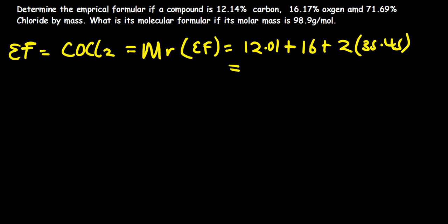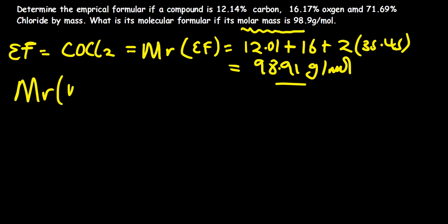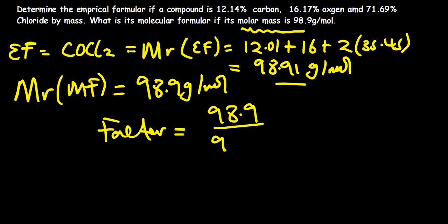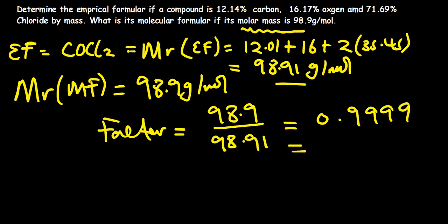What do you get as your molar mass for the empirical formula? When I add this, I'm getting 98.91 grams per mole as my empirical molar mass. The molar mass of the molecular formula is given as 98.9 grams per mole. Our factor is found by dividing the molecular formula mass by the empirical formula mass: 98.9 divided by 98.91, giving 0.9999, which we round off to 1.